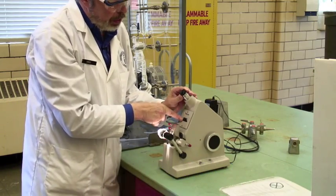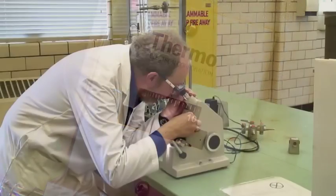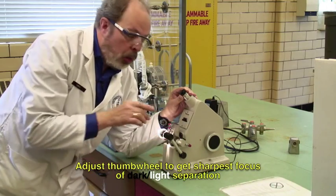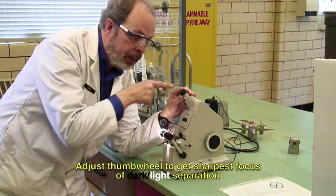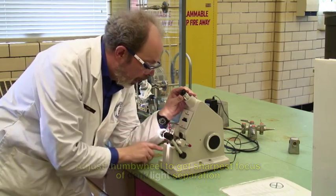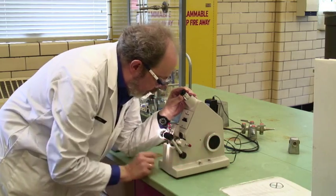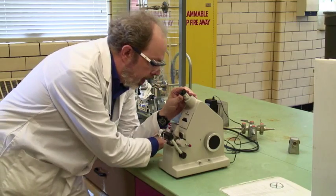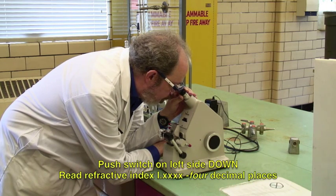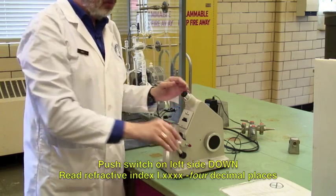At this point, you do a secondary adjustment with this thumb wheel. And turn it until you get the best focus you can. At one end, you'll get red and fuzzy. At the other end, you'll get blue and fuzzy. In between that, you'll get a nice sharp line. Once you need to readjust this to get it exactly in line and push the switch on the other side down and you can read the refractive index. This one happens to be 1.3830. You need four decimal places.